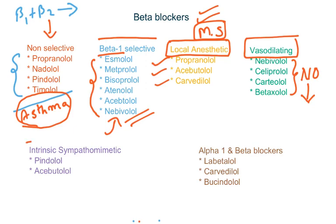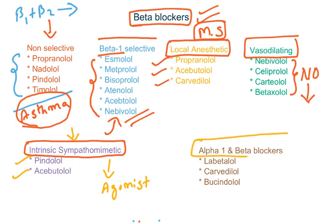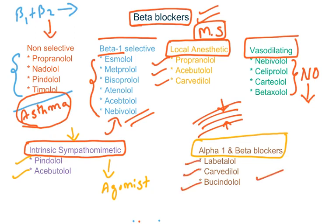The next category is intrinsic sympathomimetic agents. This sounds counterintuitive — beta blockers act as antagonists, whereas sympathomimetic means agonist. Some beta blockers have partial agonist activity, but in the long run or at higher doses they block the receptor. That property is known as intrinsic sympathomimetic activity. Pindolol and acebutolol belong to this category. The last category is alpha1 and beta receptor blockers. Alpha1 receptors are present on blood vessels; their activation causes vasoconstriction, so blocking them causes vasodilation. In this class you have labetalol, carvedilol, and bucindolol. These drugs are also vasodilating, but the mechanism differs — they block alpha1 receptors, whereas the vasodilating beta blockers increase nitric oxide release.